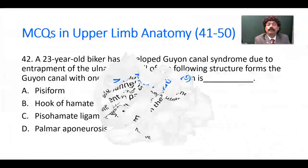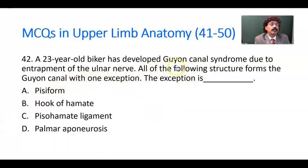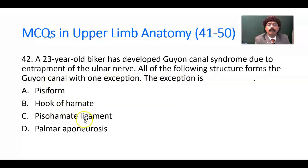Question number 42. A 23-year-old biker has developed Guyon's Canal syndrome due to entrapment of the ulnar nerve. All of the following structures form the Guyon's Canal with one exception. The canal is formed by the pisiform, hook of the hamate, and pisohamate ligament. The exception is what?